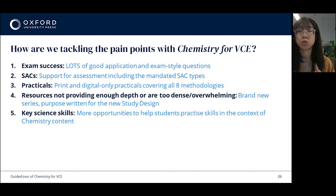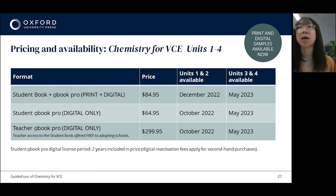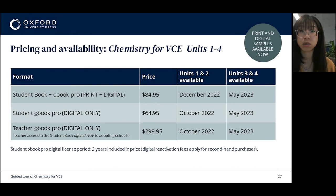In terms of pricing and availability, units one and two will be available later this year and units three and four in term two next year. Complete print and digital samples for units one and two are now available in your Oxford Digital library. The student digital license is for two years, so after year 11 and into year 12, students still have access if they need to go back and fill in any gaps in their understanding.